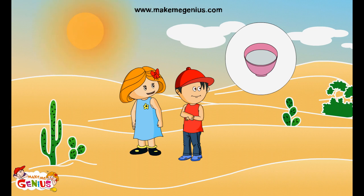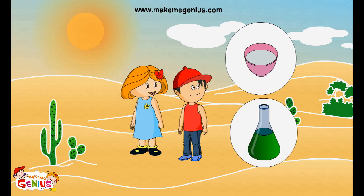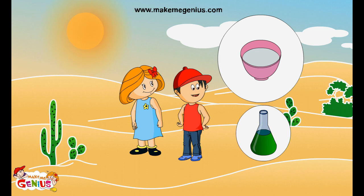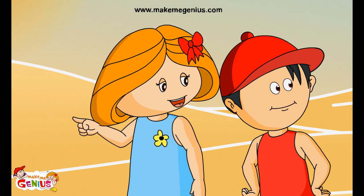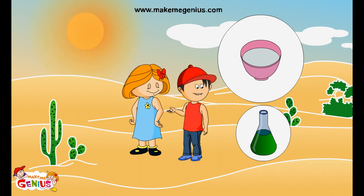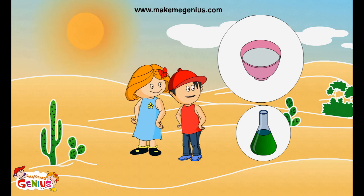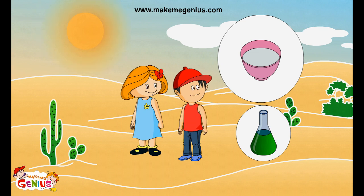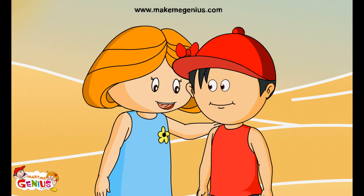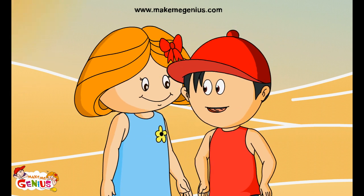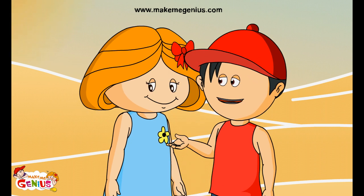If we keep water in these two containers in sunlight, from which container will water evaporate faster? Water will evaporate faster from the bowl. Right. But why? Because the bowl has more surface area, so more sunlight can directly fall on the water, and more water will evaporate. Sweetheart, you are a genius! How do you know all this? I learnt it in the Faces of Matter video on MakeMeGenius.com.